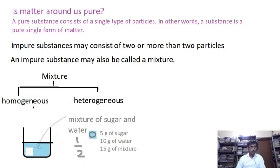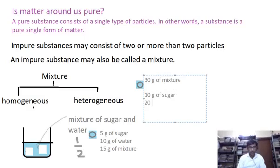Now suppose we take another part of this mixture, and this part is 30 grams of mixture instead of 15. We shall find that it contains 10 grams of sugar and 20 grams of water. That is, the ratio between sugar and water in this part of the mixture is also 1 by 2.